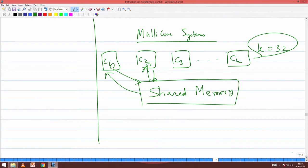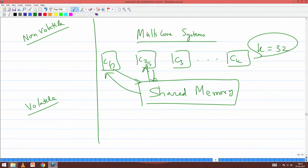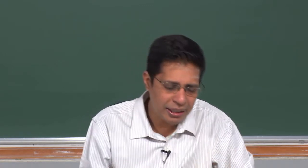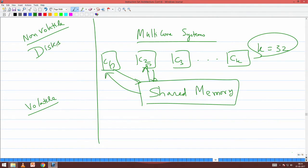There are two types of memories: non-volatile memory and volatile memory. Non-volatile memory retains data when power is switched off; volatile memory gets erased when power is not available. Non-volatile memory includes disks and EEPROM (Erasable Programmable Read-Only Memory). Volatile memory includes your RAM, cache, and registers.